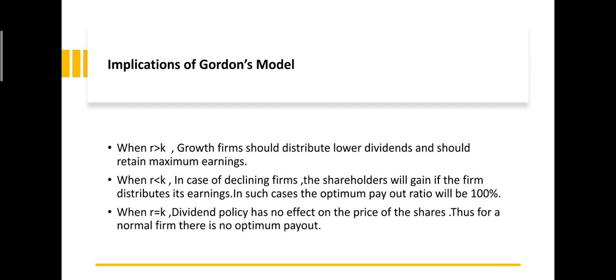In conclusion, in the case of growth firms, the firm should distribute lower dividends and retain maximum earnings. Growth firms keep close to 100% retention, though a small dividend may still be paid. In the case of declining firms, Walter's model says 100% dividend payout. For normal firms, when R is equal to K, dividend decisions are irrelevant.